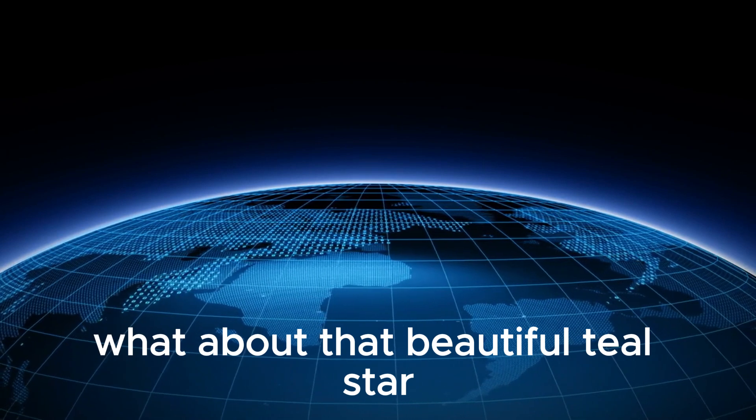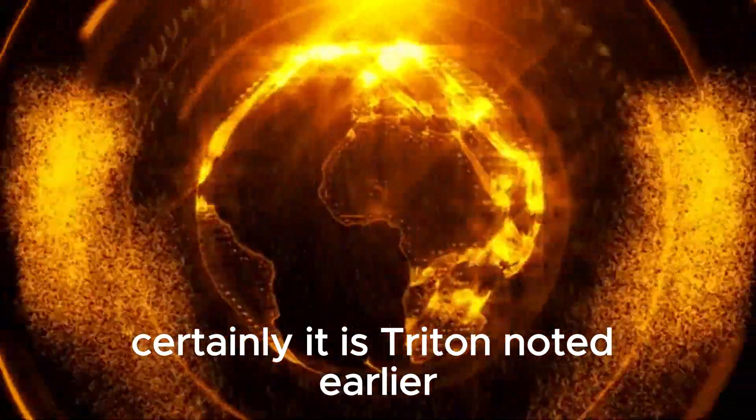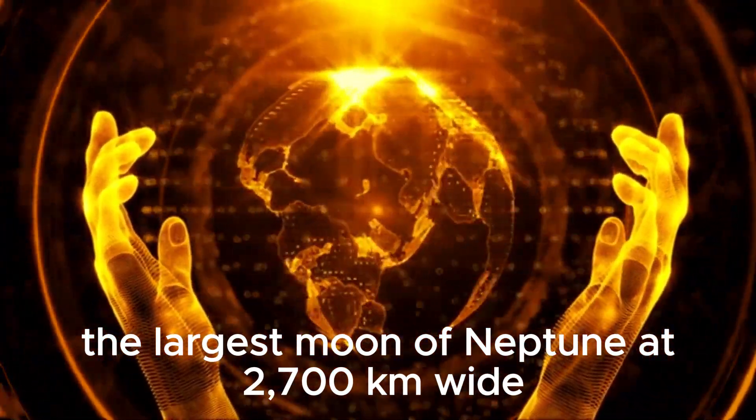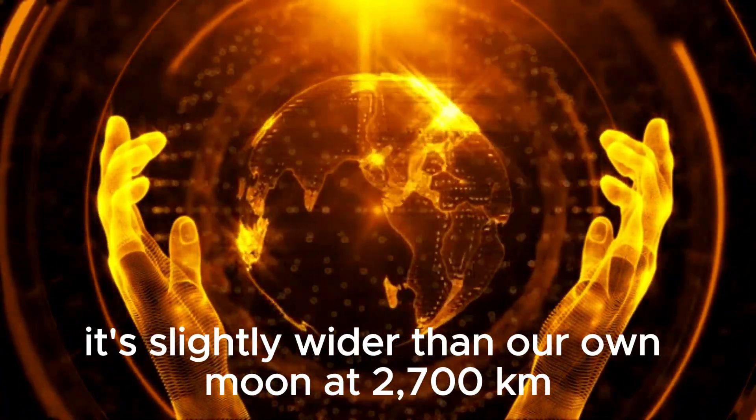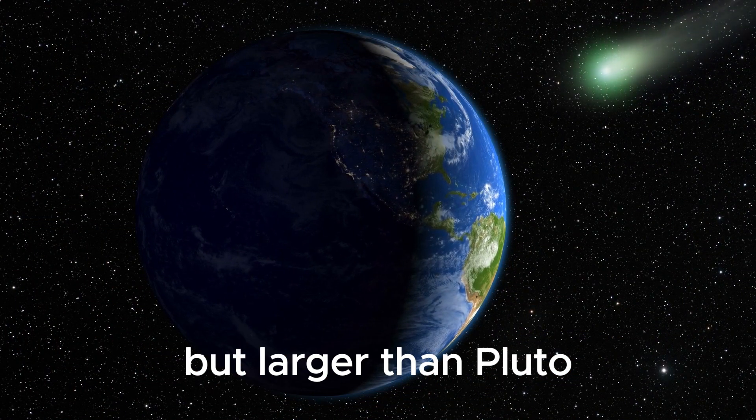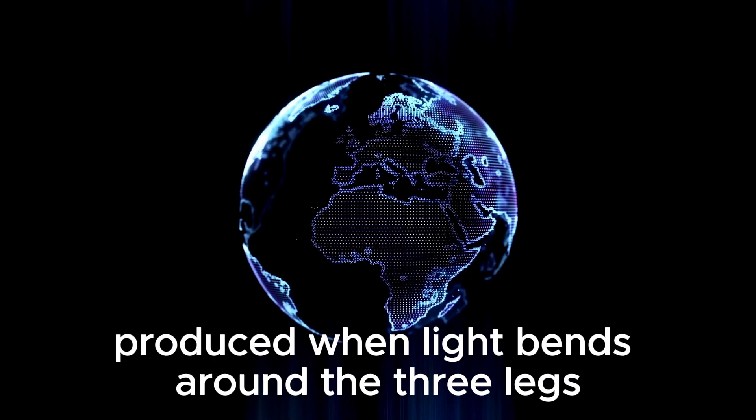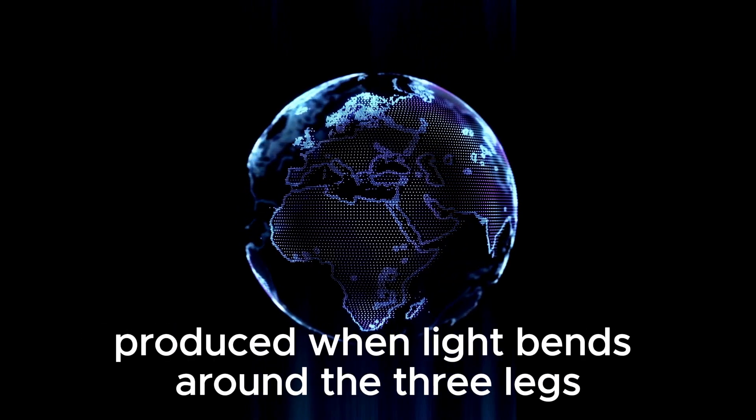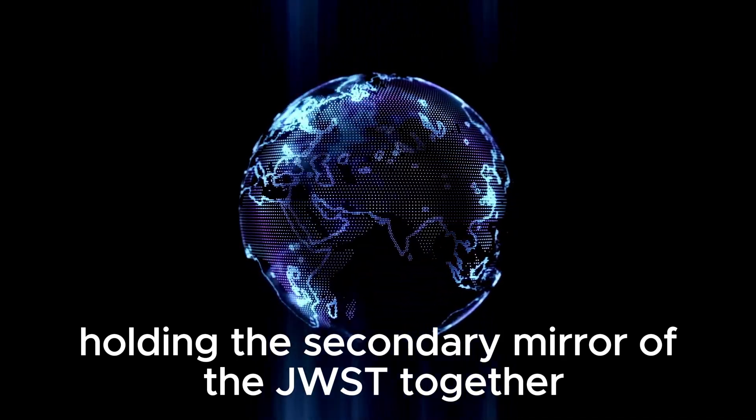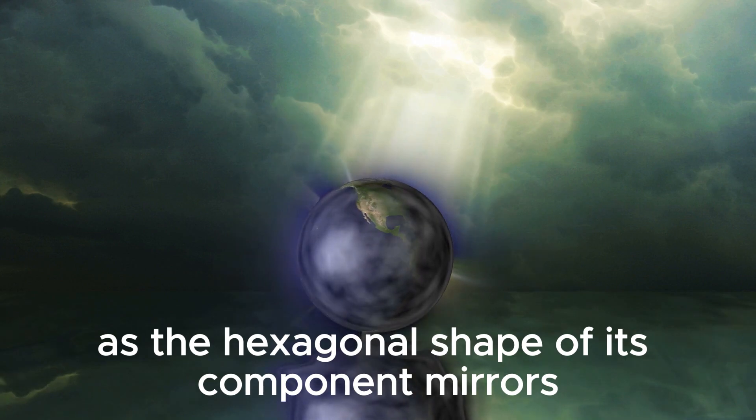What about that beautiful teal star? Certainly, it is Triton, noted earlier, the largest moon of Neptune at 2,700 kilometers wide. It's slightly wider than our own moon at 2,700 kilometers but larger than Pluto. The lines running through it are diffraction spikes, produced when light bends around the three legs holding the secondary mirror of the JWST together, as well as the hexagonal shape of its component mirrors.